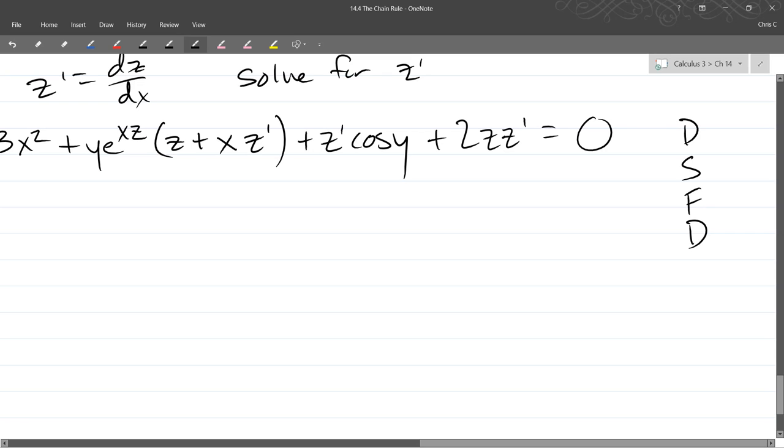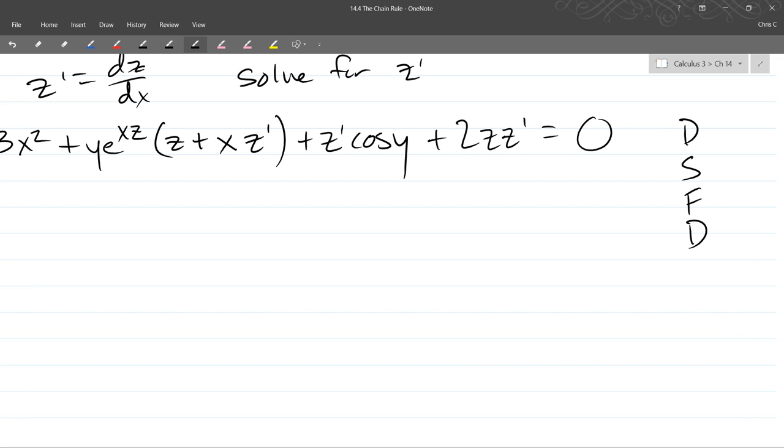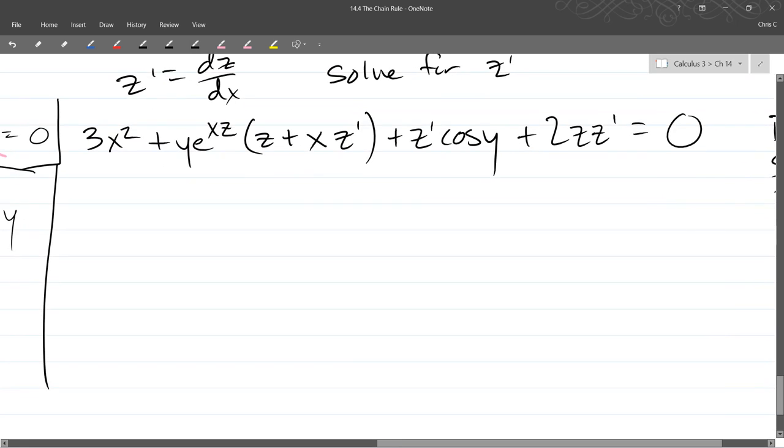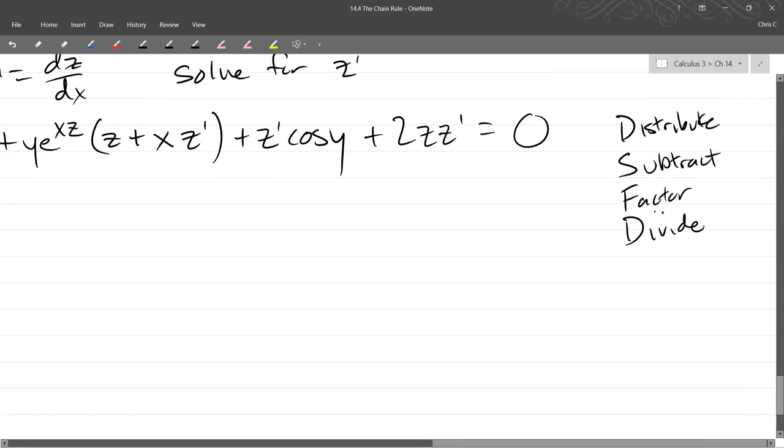So I've talked about DSFD way back in calc 1. It's really just do algebra to solve for z prime. So distribute something, subtract, an f word. Factor. Factor, yes. Divide. All right. I think this procedure will work right here. So expand or distribute everything out. Subtract everything that's not z prime out of here. And then factor and divide. So go ahead and do those steps right now.